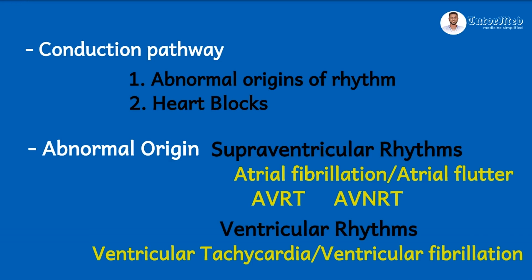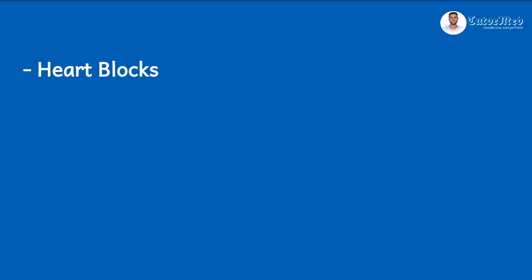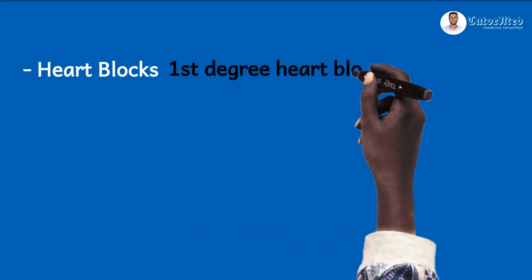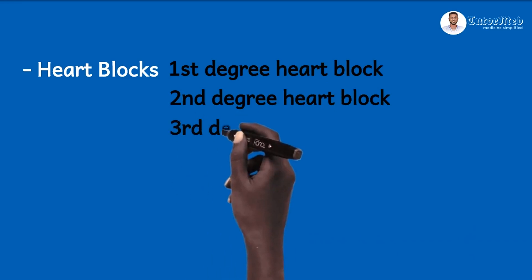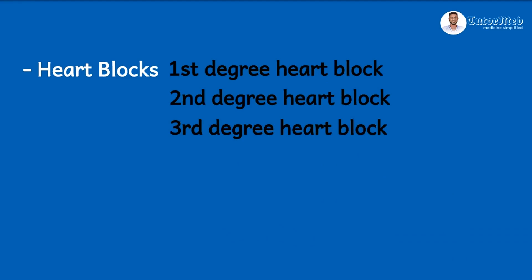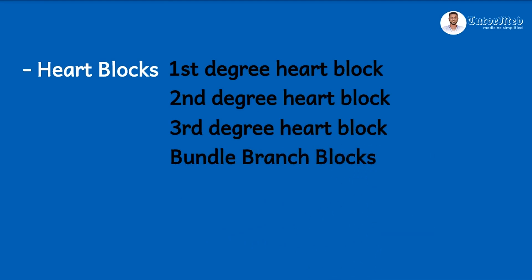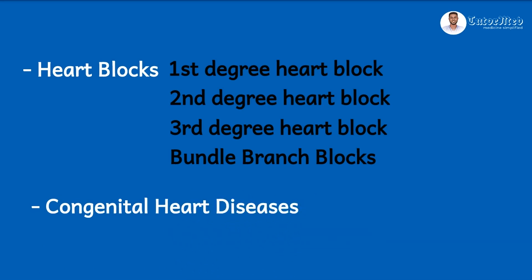The second block is heart blocks — conditions that block the conduction pathway. There are three basic types: first-degree heart block, second-degree heart block (with two subtypes: Mobitz type 1 and Mobitz type 2), and third-degree or complete heart block. You can also have bundle branch blocks — either left bundle branch block or right bundle branch block. This summarizes the acquired conditions of the cardiac component. We can then turn our minds to congenital heart diseases like ventricular septal defects, atrial septal defects, etc.